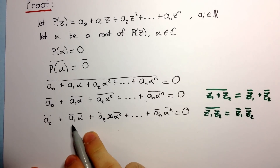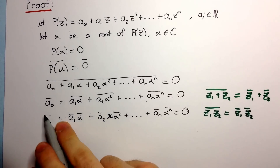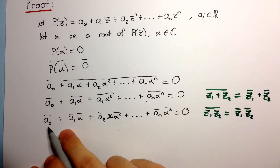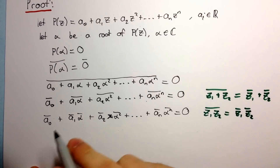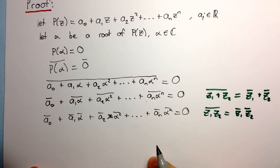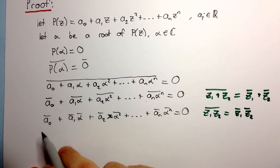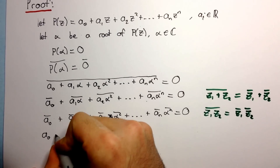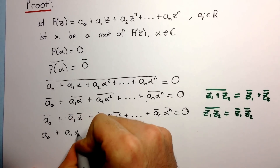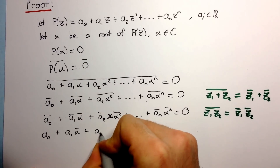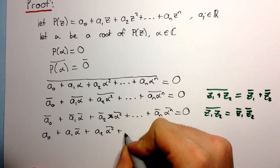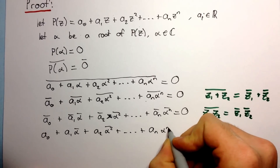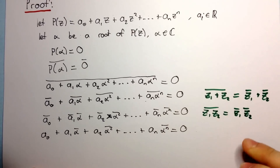Now the next step is recognizing that all these coefficients, since they are real, their conjugates are equal to themselves, because the conjugate of a real number is just that real number since a real number does not have an imaginary part. So we get A₀ plus A₁ alpha bar plus A₂ alpha squared bar plus up to AN alpha to the N bar is equal to zero.